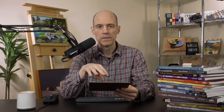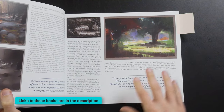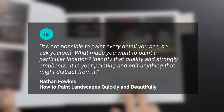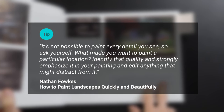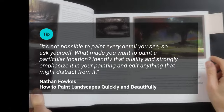In this painting it was pretty simple to identify the focal point — it's obviously the waterfall. But other times you might struggle to figure out what to eliminate. That's where I recommend reading Nathan Fowkes' book about gouache painting. There's a lot in it about simplifying, and I like this quote: 'It's not possible to paint every detail you see. Ask yourself what made you want to paint this particular location. Identify that quality, strongly emphasize it, and edit anything that might distract from it.'